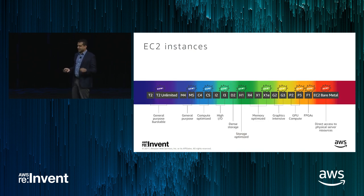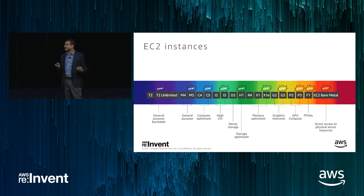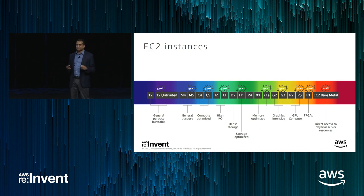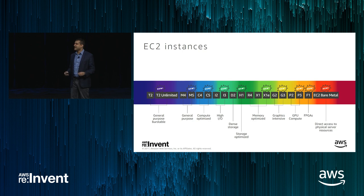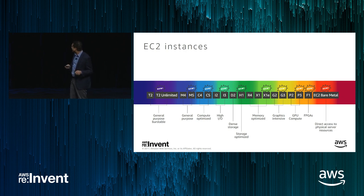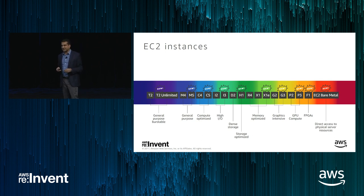This slide represents the spectrum of our instance families. Every instance with a 'new' label is something we've introduced in the last year since the last re:Invent. We constantly have new generations of instances with new capabilities. Some things we announced in just the last two days: T2 Unlimited, M5, H1, and Bare Metal — that's the pace we're going at.